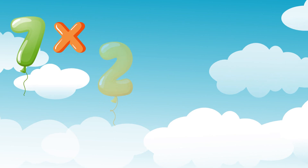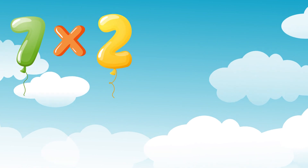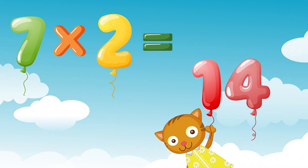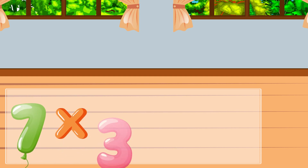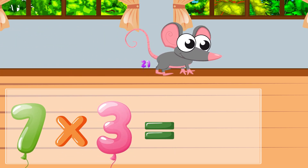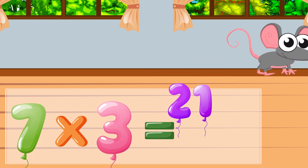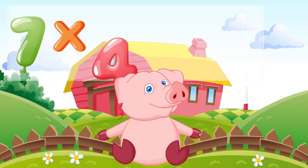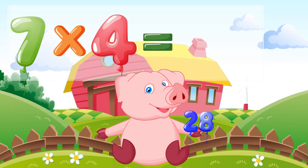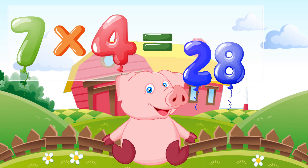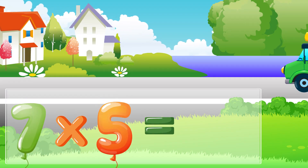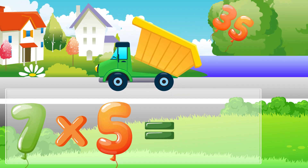Seven times two is fourteen. Seven times three is twenty-one. Seven times four is twenty-eight. Seven times five is thirty-five.